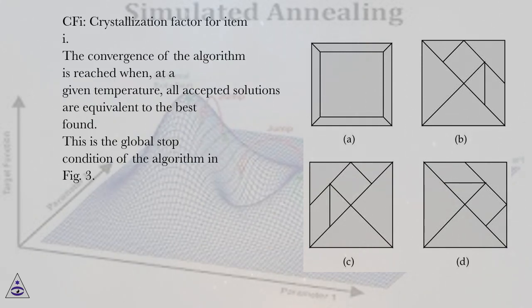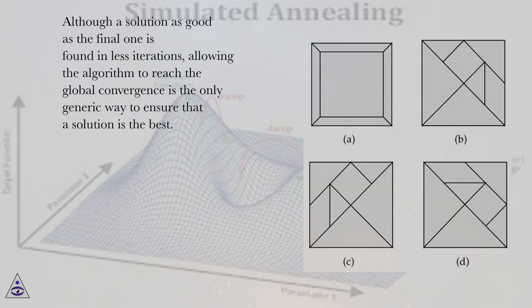The convergence of the algorithm is reached when, at a given temperature, all accepted solutions are equivalent to the best found. This is the global stop condition of the algorithm in Figure 3. Although a solution as good as the final one is found in less iterations, allowing the algorithm to reach the global convergence is the only generic way to ensure that a solution is the best.